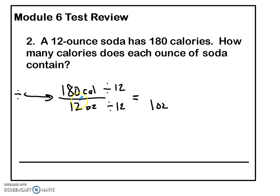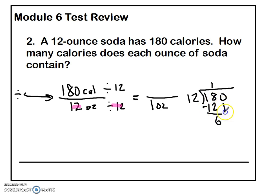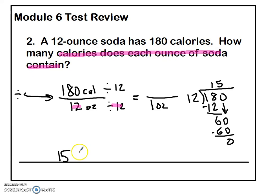If I do 12 divided by 12, I get down to one ounce, which is what I want. So the math problem is 180 calories divided by 12. You'd be allowed to use a multiplication chart or long division. 12 goes into 18 one time; 12 goes into 6 five times. So the answer is going to be 15 — but 15 what? Go back and reread the question: how many calories does each ounce of soda contain? It's going to be 15 calories per ounce. Every time we get a chance to write a unit, we want to do that — it proves we really understand what the question was asking.